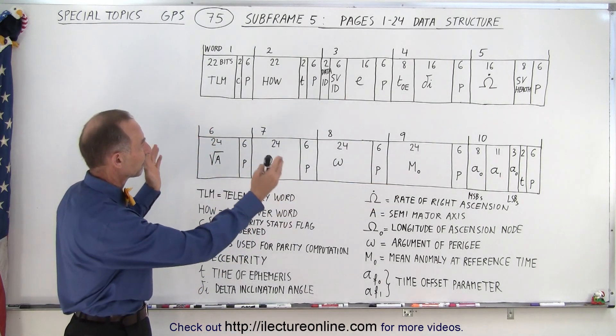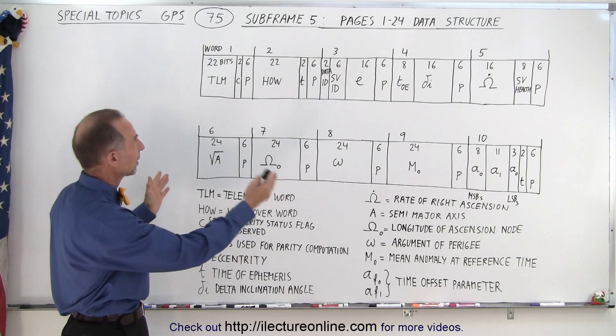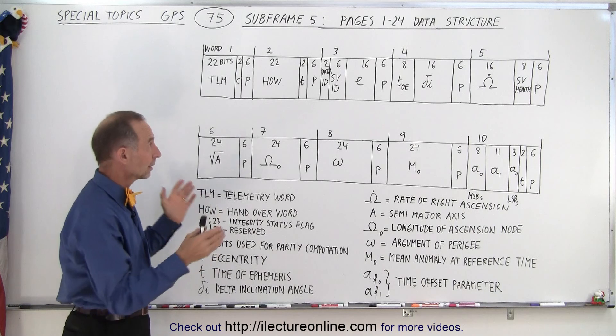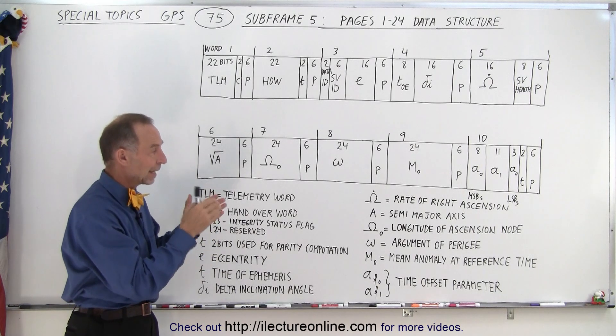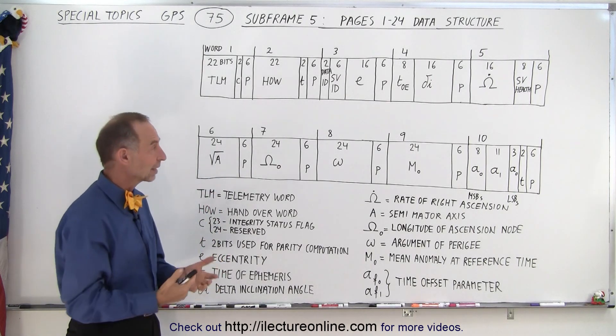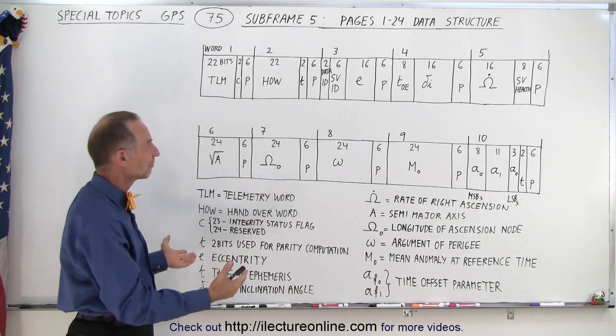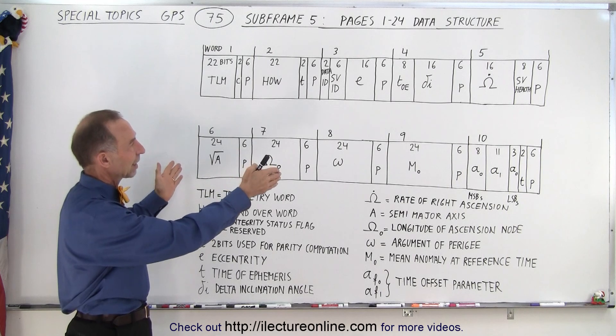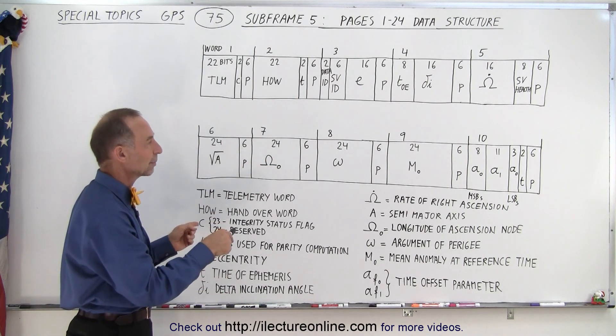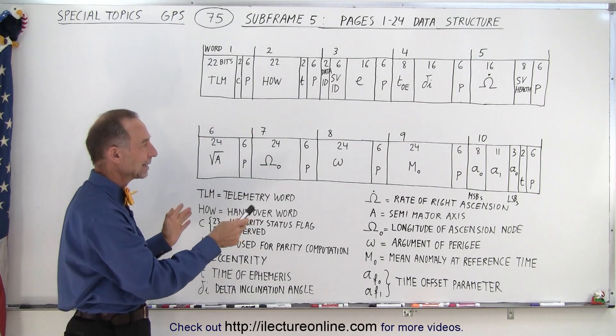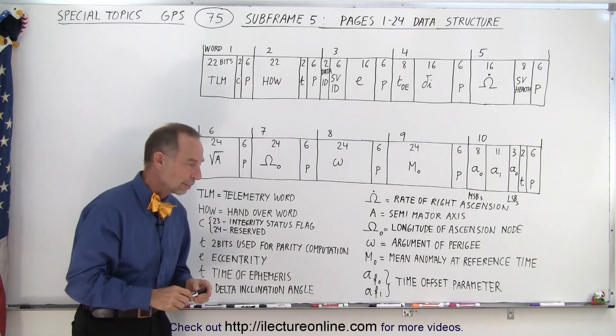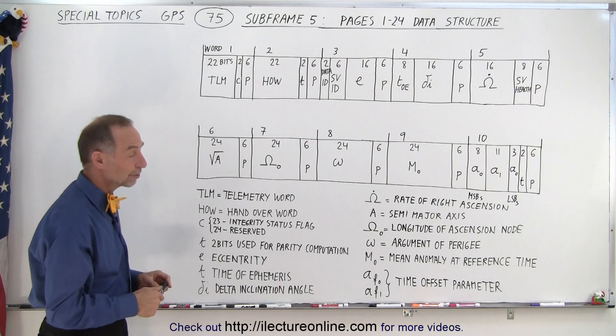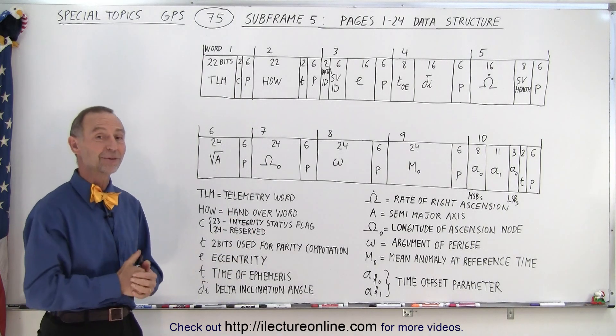So that's the data structure of the first 24 pages out of 25 pages of subframe 5. And then of course you want to take a look at the 25th page because that has a very different data construct and data information in it. But at least this is repeated a total of 24 times for subframe 5 and eight more times in subframe 4 containing the essentially the orbital parameters of each of the 32 satellites in the constellation. And that is how it's done.